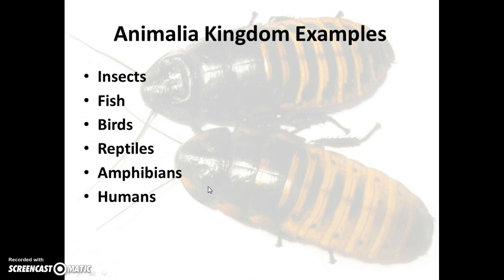Examples in the animal kingdom — students tend to forget some of these, but insects are animals. Fish, birds, reptiles, and amphibians are all animals. And yes, humans belong to the same kingdom as a mosquito or, as pictured, a cockroach. We are all considered animals.